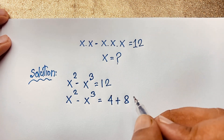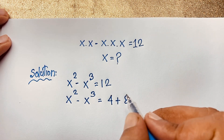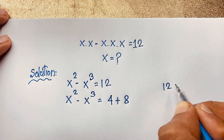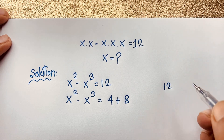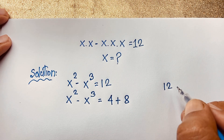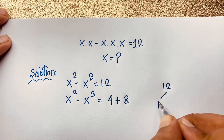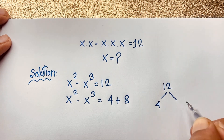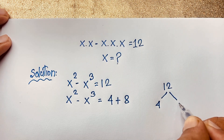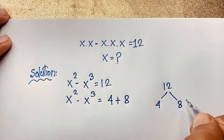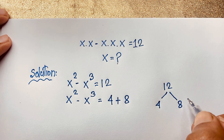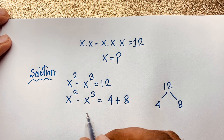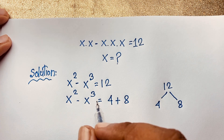4 plus 8 is equal to 12. But why do I take 4 plus 8 here? Because 12 could be 2 plus 10, or 6 plus 6, but I take 4 because 2 to the power 2 is 4, and 8 is 2 to the power 3, which is 8 — a cubic number. So I apply the math formulas for a squared minus b squared and a cubed minus b cubed.